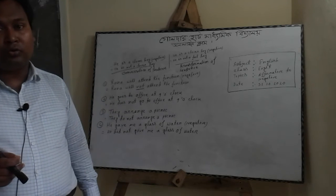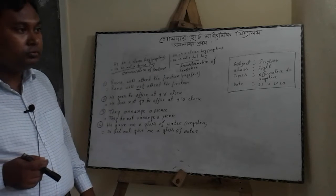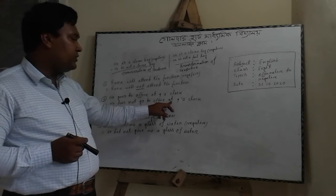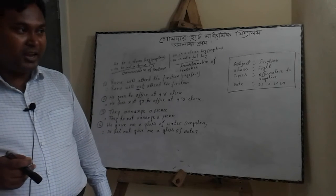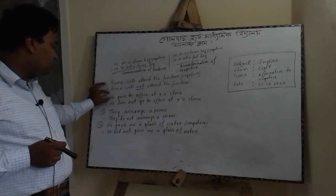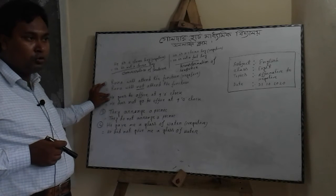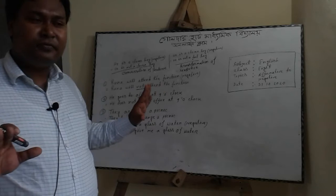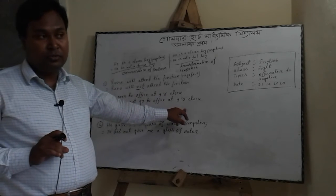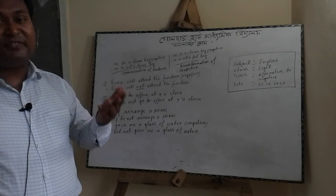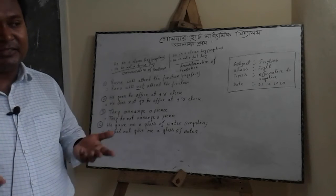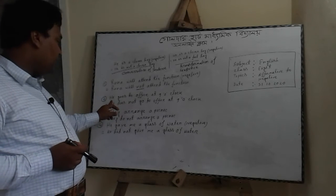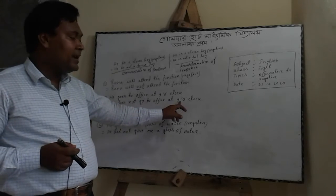In the second sentence you see: 'He goes to office at nine o'clock.' I transform this sentence to: 'He does not go to office at nine o'clock.' Here there is no auxiliary verb found in the original sentence. So if the auxiliary verb is absent in any sentence, how can we transform it into negative?